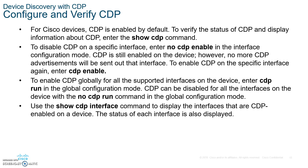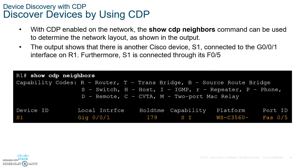To disable CDP on a single interface, type the command 'no cdp enable'. To disable it on all interfaces, type 'no cdp run'. To re-enable it globally, type 'cdp run', or 'cdp enable' on a specific interface. If you are not going to use it at all, please disable it — there is no need to keep it running.